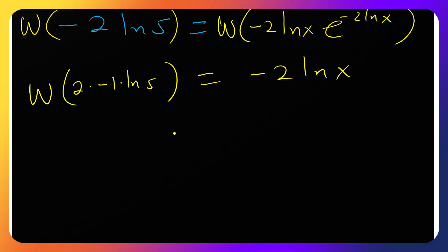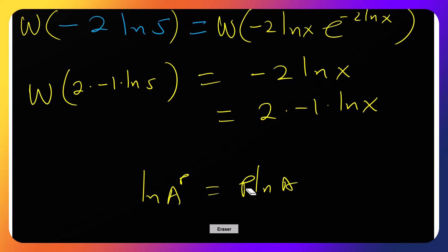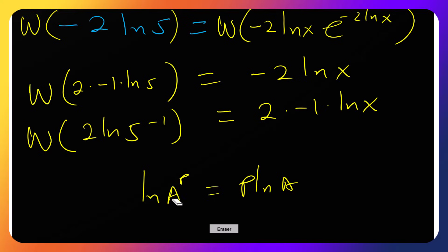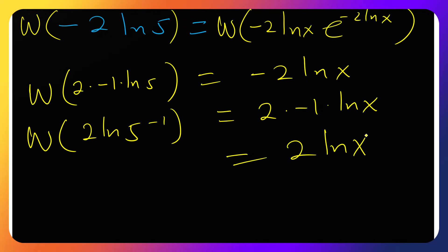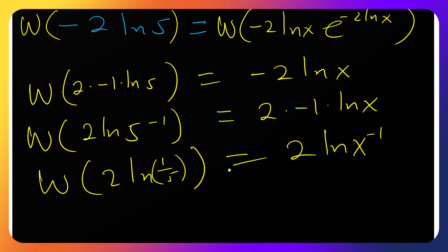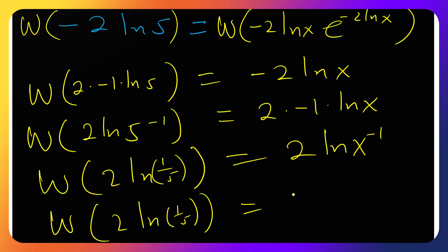We can manipulate this further. Minus 2 ln 5 is the same as 2 times negative 1 times ln 5. Using the property ln(a^p) = p·ln(a), this becomes W of 2 ln(5 to the power of minus 1), which equals W of 2 ln(1 over 5). Similarly, the right side minus 2 ln x becomes 2 ln(x to the negative 1), which is 2 ln(1 over x).